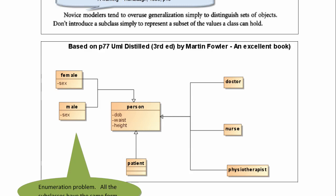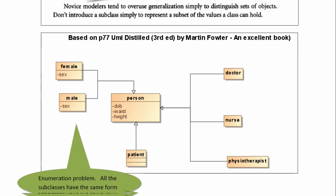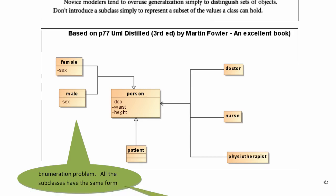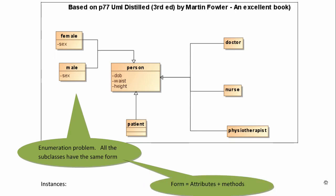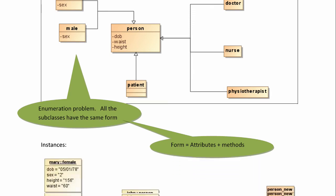Well, I would argue it isn't. The main reason is because there's a thing called the enumeration problem, and this is when all the subclasses have the same form. By the same form, I mean they all have similar attributes and methods.